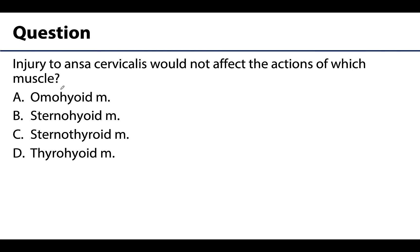Question two: injury to ansa cervicalis would not affect the actions of which muscle? Is it A, omohyoid; B, sternohyoid; C, sternothyroid; or D, thyrohyoid? The correct answer is D, thyrohyoid. This muscle is innervated by separate C1 fibers not associated with ansa cervicalis. The rest of the infrahyoid muscles are innervated by the ansa cervicalis.